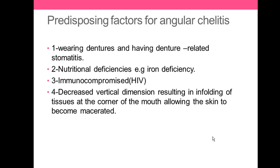The second predisposing factor is nutritional deficiency, like iron deficiency and vitamin B deficiency, which can affect kids or patients of any age. The third factor is immunocompromised patients, including those with HIV infection. Additionally, patients with decreased vertical dimension develop folding of the tissue at the corners of the mouth, allowing the skin to become macerated.